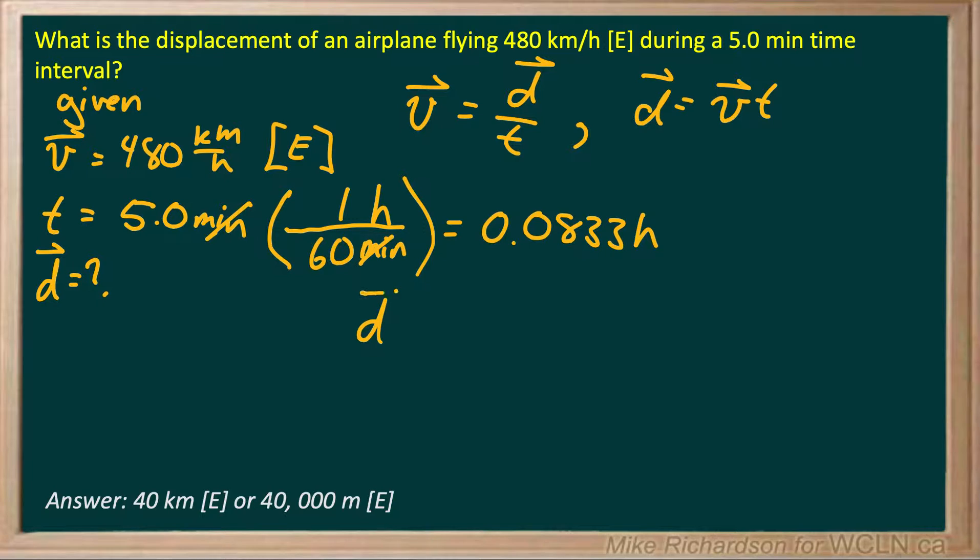My displacement is my velocity, 480 kilometers per hour, multiplied by my time in hours. The hours cancel. I'm going to be left with kilometers, which is good. And I'm left with 40 kilometers on the button.